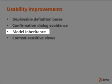In TOM 2.3 we have enhanced the concept of model inheritance to make it easier to use. Models have always been able to provide default values for objects, but in the past it was difficult to know what properties were inherited and which were not when inspecting object properties. The UI has been improved so you can easily identify inherited values when editing an object.